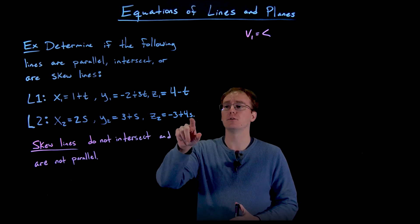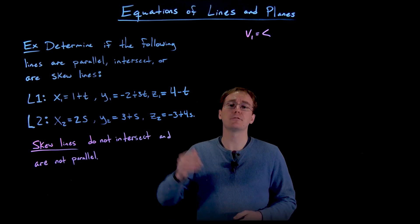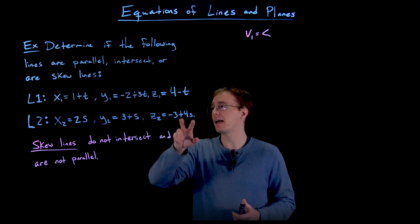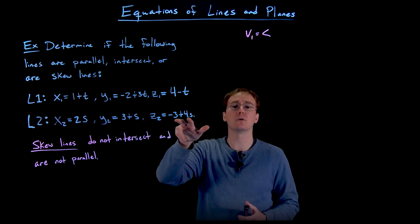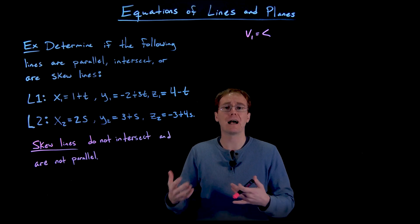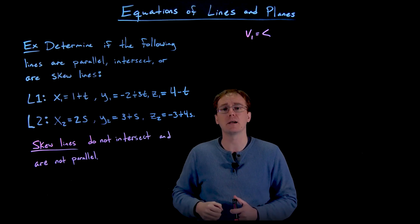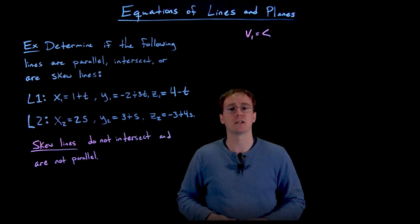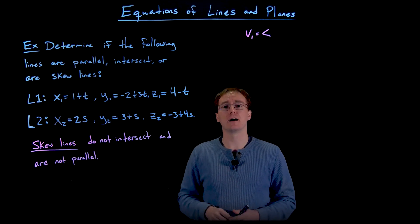An important note: when working with two different lines described parametrically, we must use two different parameters for each line. We cannot use the same parameter t for both, because if the lines have a point of intersection, it might correspond to one t-value on the first line but a completely different value on the second. Using the same parameter would prevent us from finding the intersection accurately.